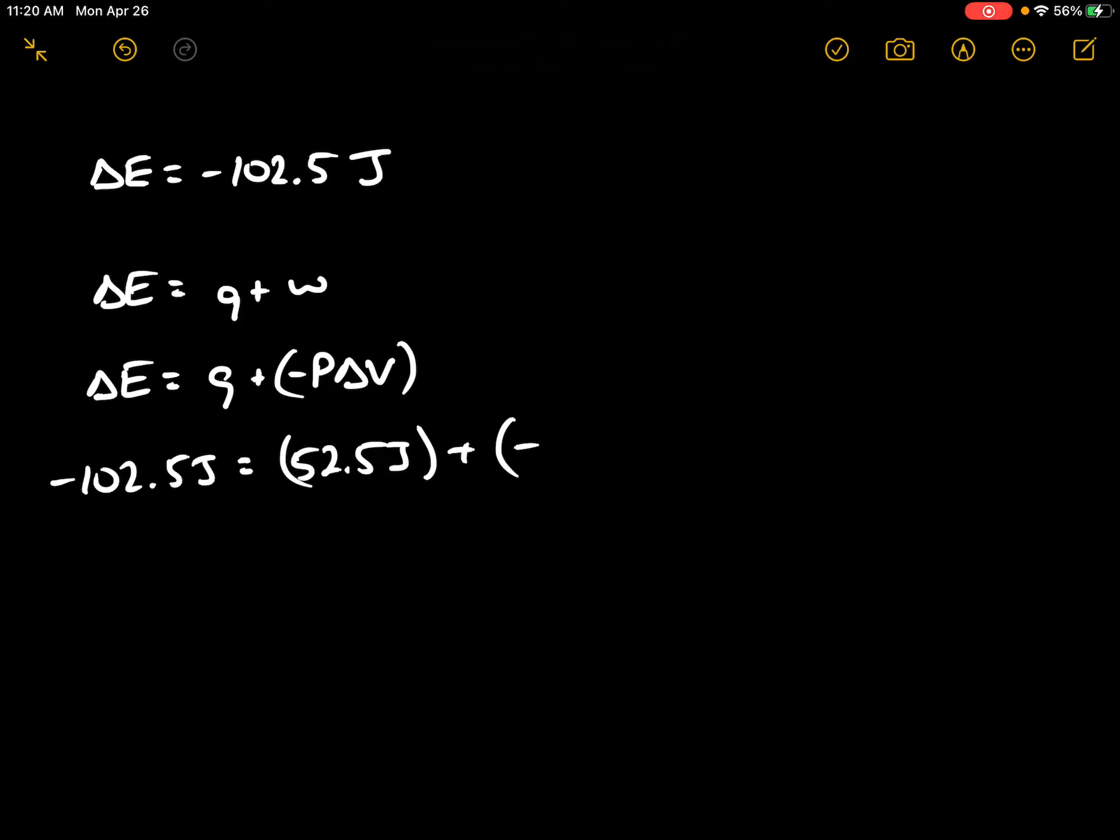Pressure here is given at 0.5 atmospheres, and delta V is our unknown. Solving this for delta V, we find that delta V is equal to 3.06 joules per atmosphere, sorry, 310 joules per atmosphere.